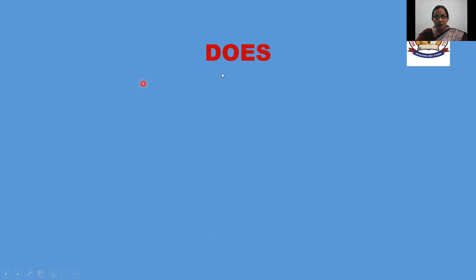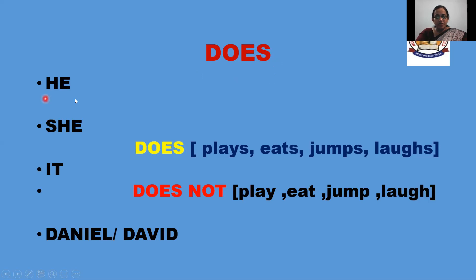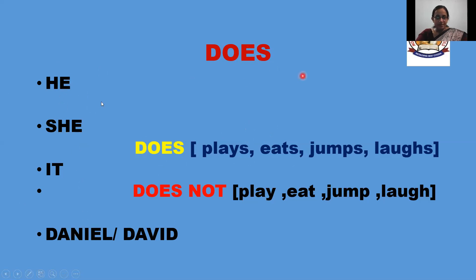Now see does — how to use does. On the screen you can see: he, she, it, and two names are given: Daniel and David. So he does. If you use he with do, it is wrong. She does, it does, Daniel does, David does or doesn't. So when you use he, she, it or any name, the verb used should have S. He plays, he eats. You can't say he does without it. So when you have to use does, with he, she, it or any name, then you can use does.